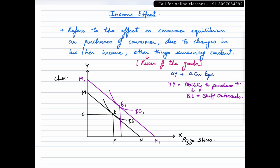And at this particular point, consumer is consuming let us say P1 quantity of pizza slices and C1 quantity of chocolates. Relative to the initial equilibrium which is E, consumer has now increased his consumption of both chocolates and pizza slices.